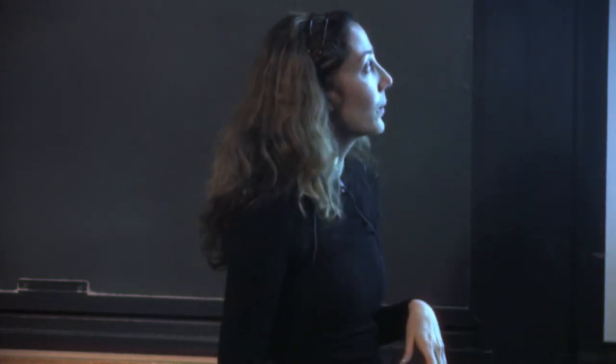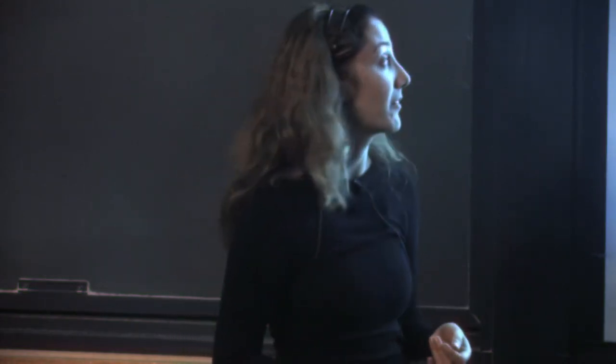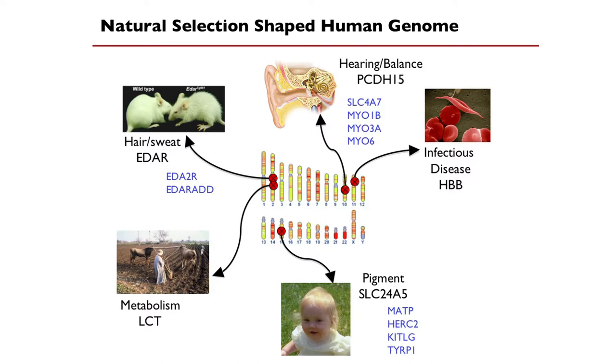We're now doing a very big study in China with Li Xin at Fudan University trying to explore what different phenotypes this might be driving. As we looked in Asia, we found many genes that are expressed in sensory hair cells or in the ear that are under selection. It seems like two major things we're seeing in Asia are hair and sweat changes, and also sensory perception changes — something to explore.